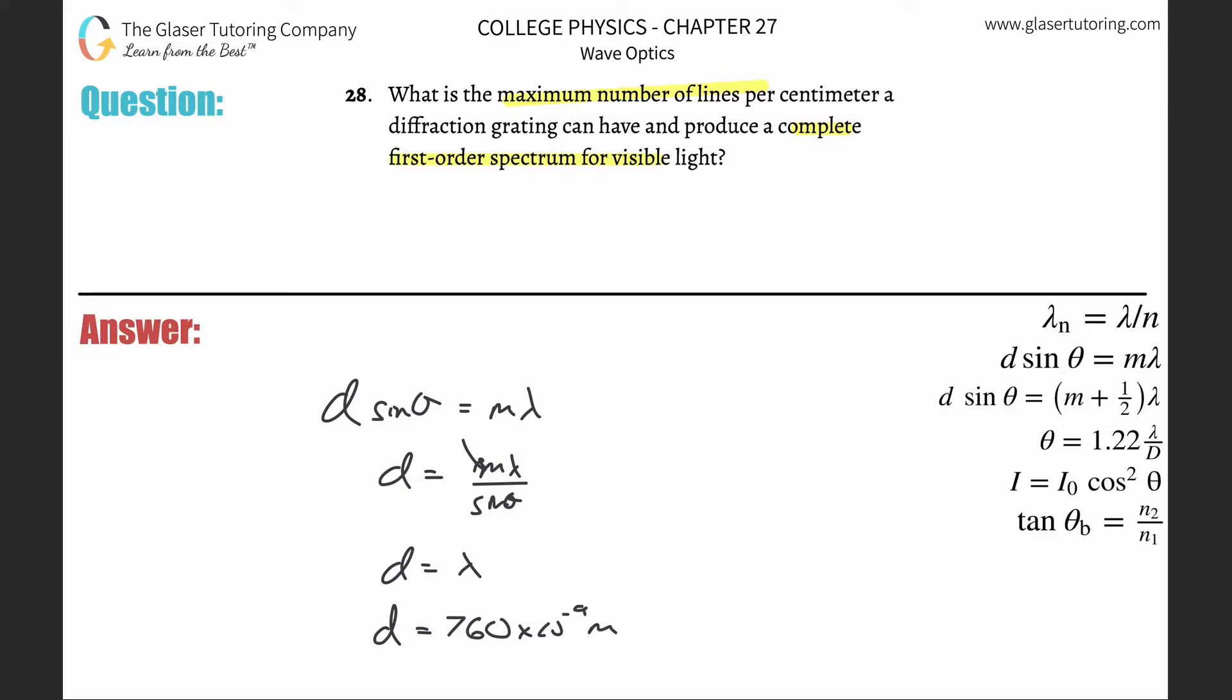Now you can convert that into centimeters if you want, but what I'm going to do is take the reciprocal because this is really meters per line, and now I want lines per meter, so that's really one line every 760 times 10 to the minus 9th meters.